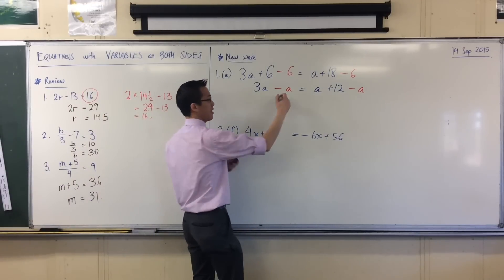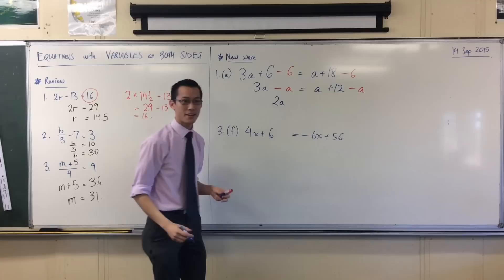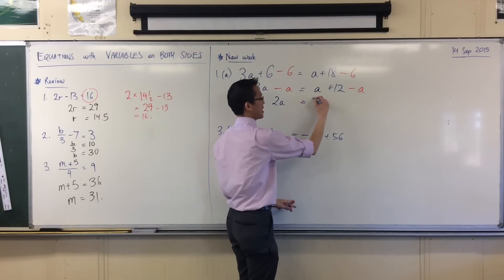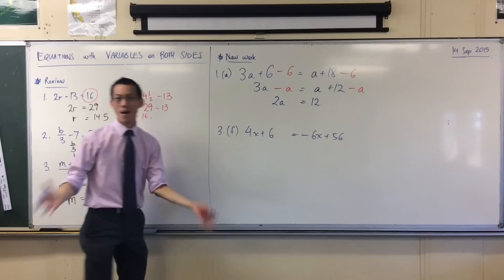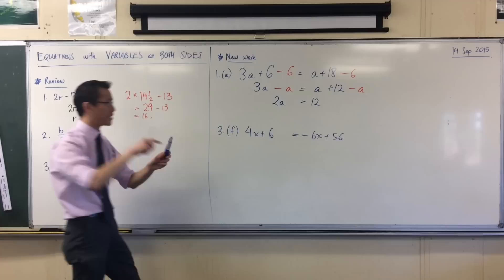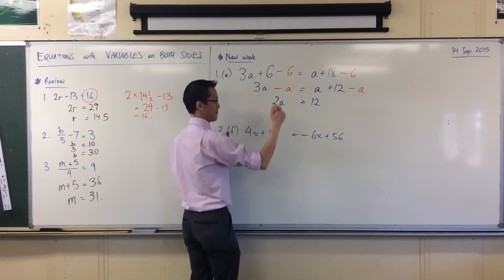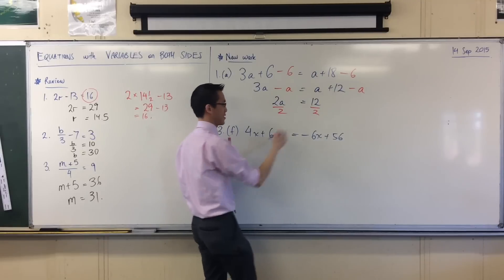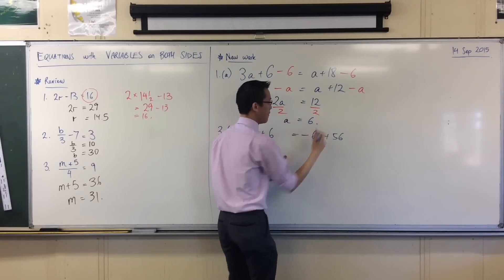3a take away 1a is 2a. How many a's am I left with on the right? None. They all disappear and I just have that 12. One last thing to do. We've been in this position before. I should divide by 2. Very good. So divide by 2, divide by 2, and that leaves us with 6.